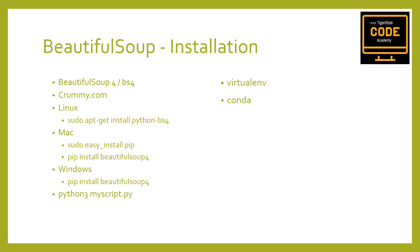The basic method for installing on Linux is: sudo apt-get install python-bs4. On Mac, you first install pip — the Python package manager — with sudo easy_install pip, then run pip install beautifulsoup. Likewise on Windows, if you have pip installed, you just do pip install beautifulsoup4.